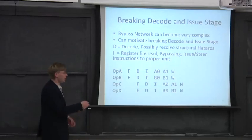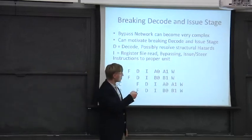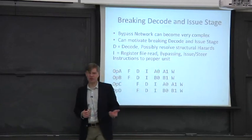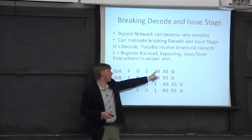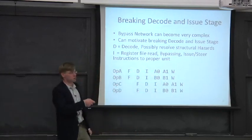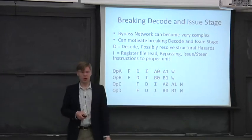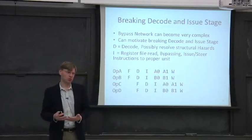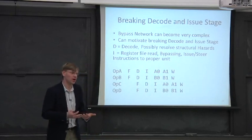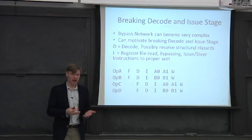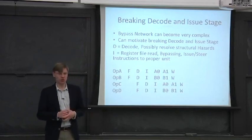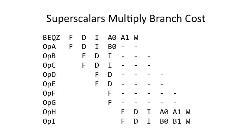If we know that the branch gets resolved out of the first execute stage of the pipe or in our two pipe here, it's out of A0, we've just increased the branch cost by one. So now something that would have a branch misprediction penalty of let's say two cycles just became three cycles. And this can start hurting your performance.